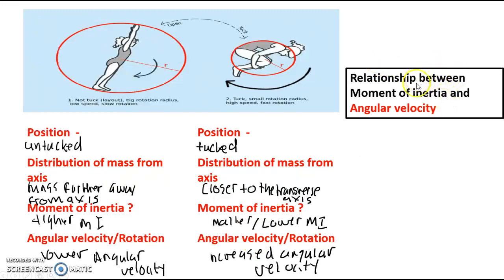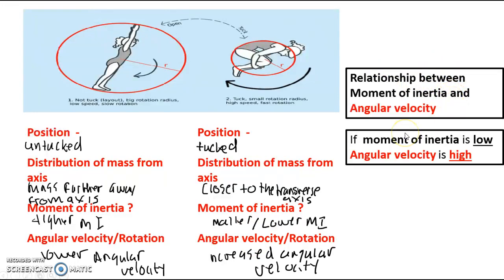So the key thing is that we have an understanding that this is a huge relationship, and if one's high, the other's low. So in this case, if the moment of inertia is low, e.g. there's a low resistance, rotation is going to happen, it means that the angular velocity is high.